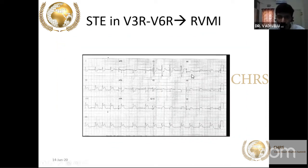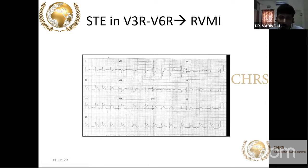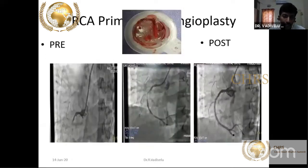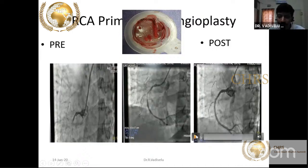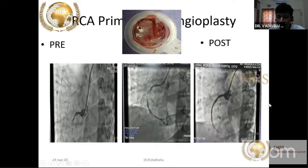In this patient, V3R, V4R, and V5R all show ST elevation. The angiogram shows the right coronary artery is approximately occluded. After thrombectomy, a large RV branch is visible — this is the reason for ST elevation in V1. After reconstruction, the RCA is completely restored and the patient did well. The RV branch arises from the proximal RCA, confirming why V1 ST elevation indicates proximal RCA occlusion.